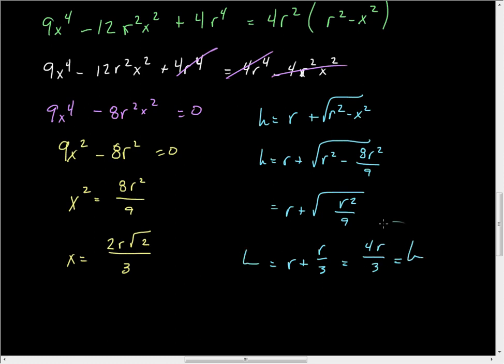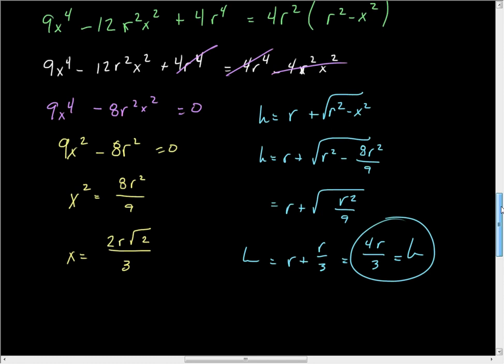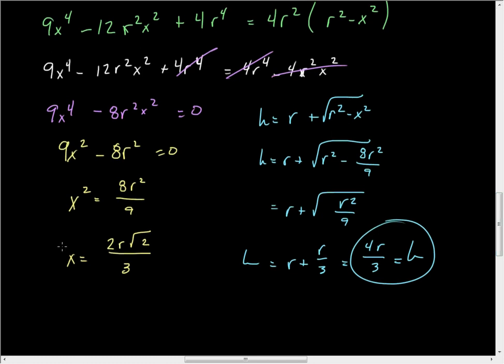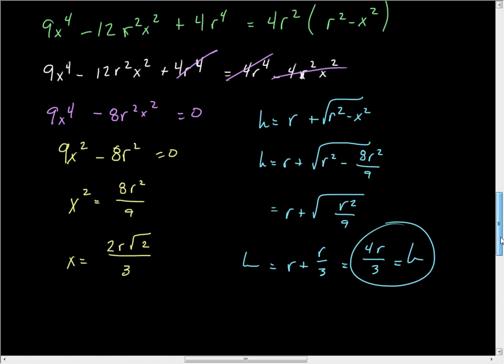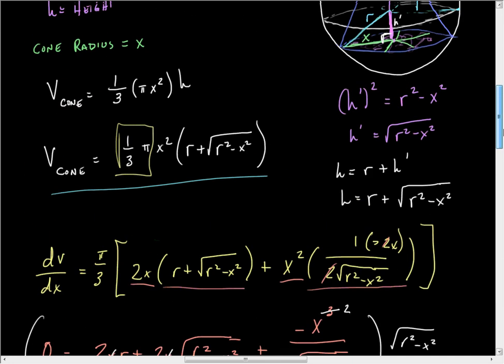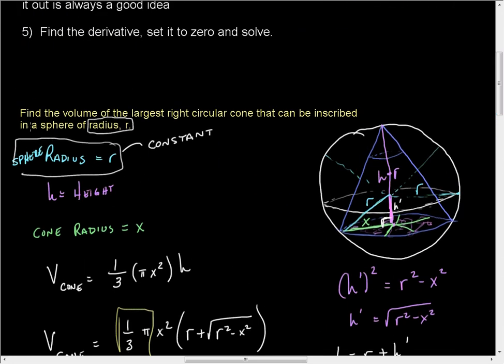Okay. So now we have X and we have H in terms of R. If we go back up to the original premise, it says find the volume. Well, the volume, recall, is 1 third the base times the height.